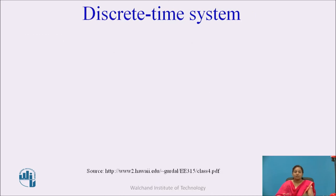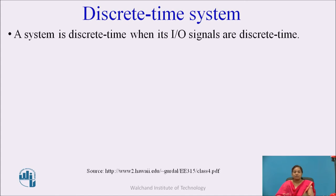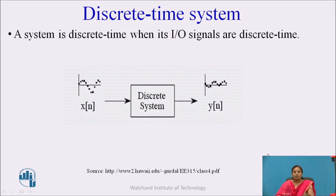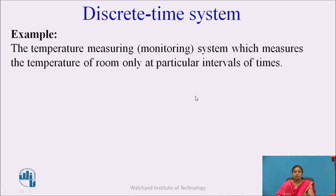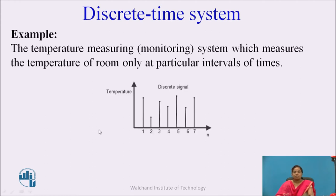The next is a discrete time system. A system is discrete time when its input and output signals are discrete. Here x[n] is in the form of discrete values, and the output of the system is also in the form of discrete values. For example, a temperature monitoring system that measures the temperature of a room only at particular intervals — say at 1 o'clock, 2 o'clock, 3 o'clock, 4 o'clock — is called a discrete time system.